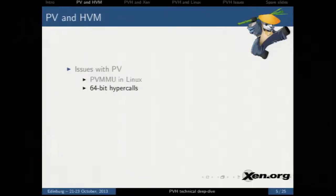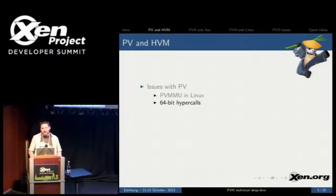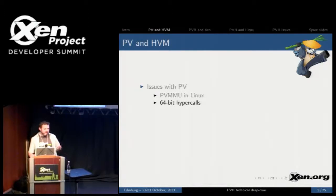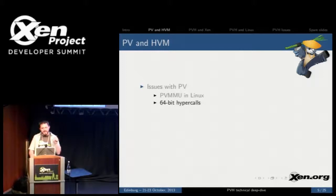Another issue with PV is that in 64-bit mode, we have the issue of 64-bit system calls being very slow. The reason for this is that we need at least three levels of protection in order to run a hypervisor: the hypervisor mode, the guest kernel mode, and the guest user space mode.